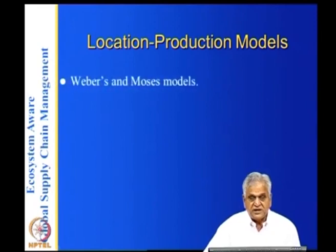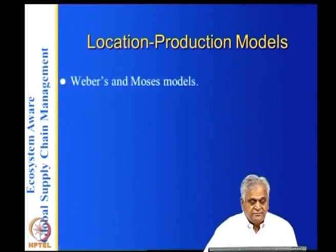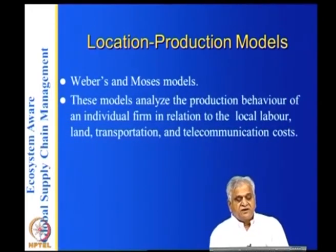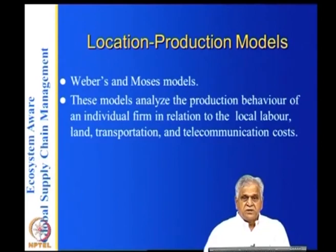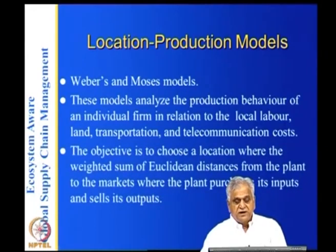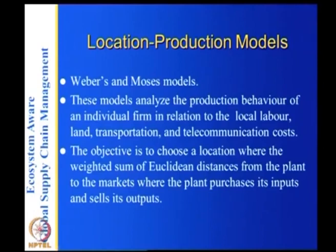The Weber and Moses location production models analyze the production behavior of an individual firm in relation to local labor, transportation, and telecommunication costs. The objective is to choose a location where the weighted sum of Euclidean distances from the plant to the market — where the plant purchases its inputs and sells its outputs — is minimized. Basically, you want to locate at the center of gravity of both suppliers and buyers.